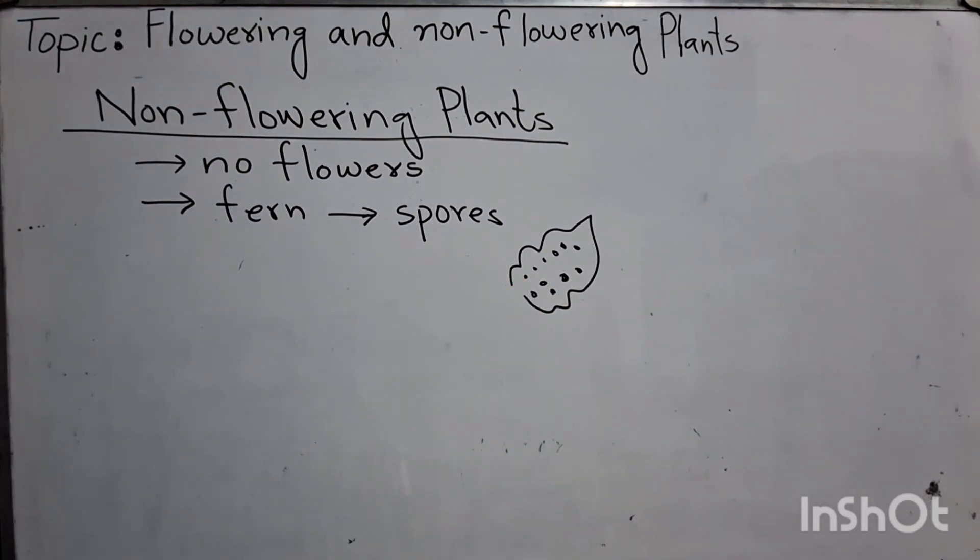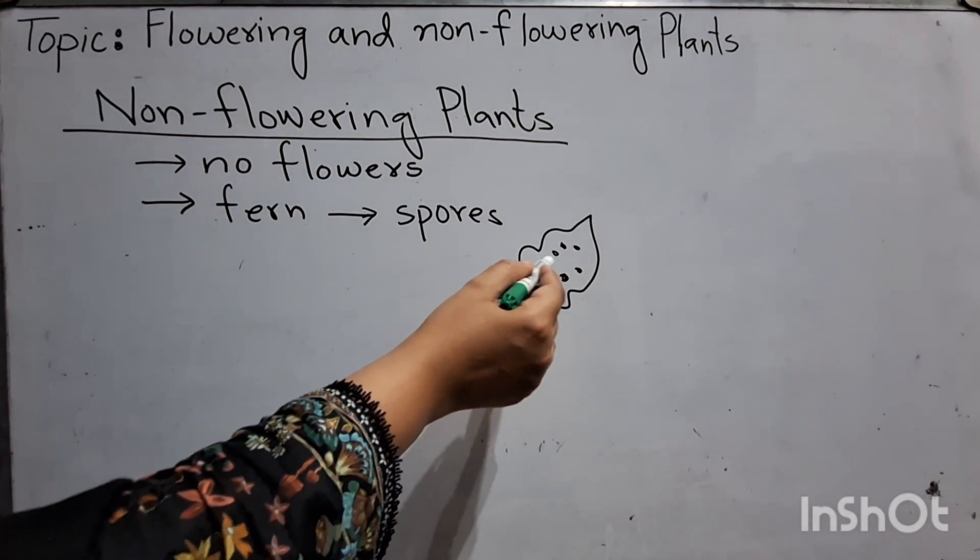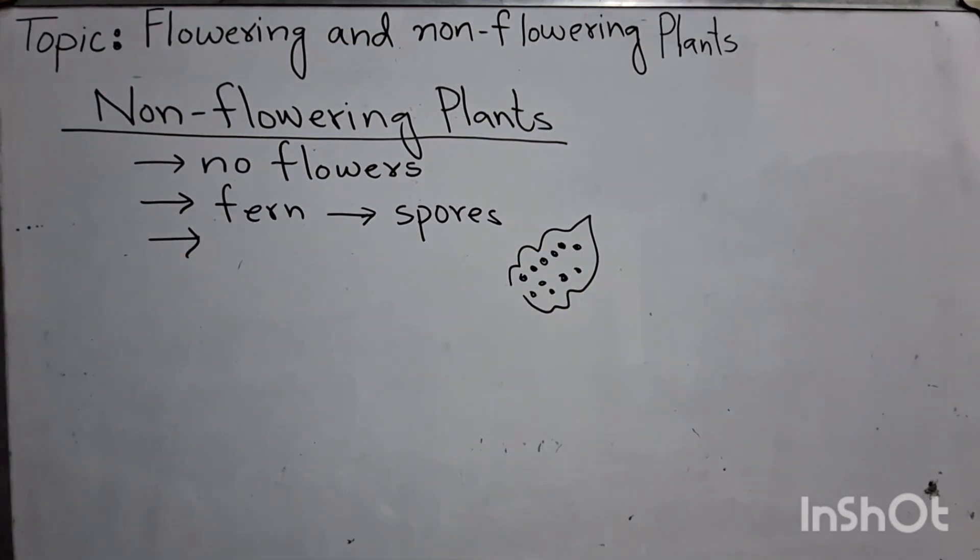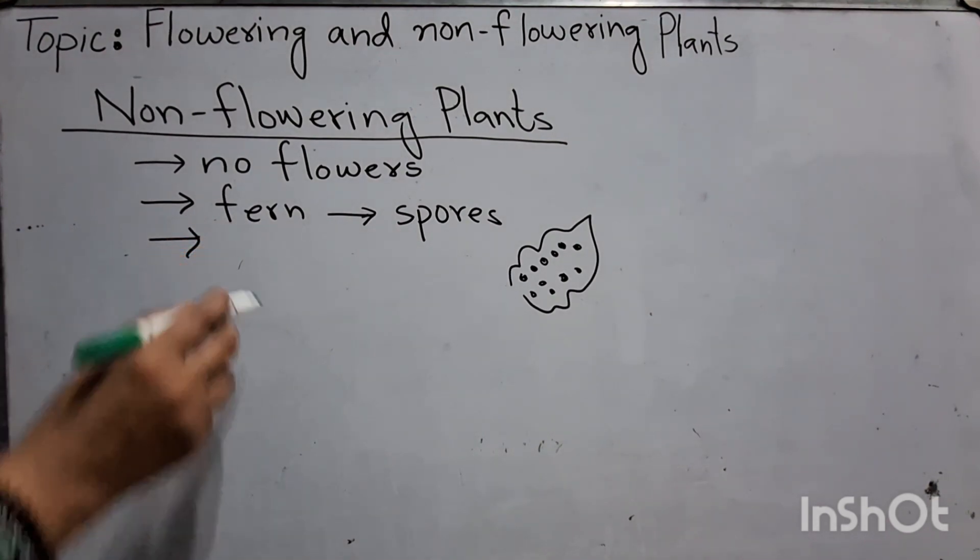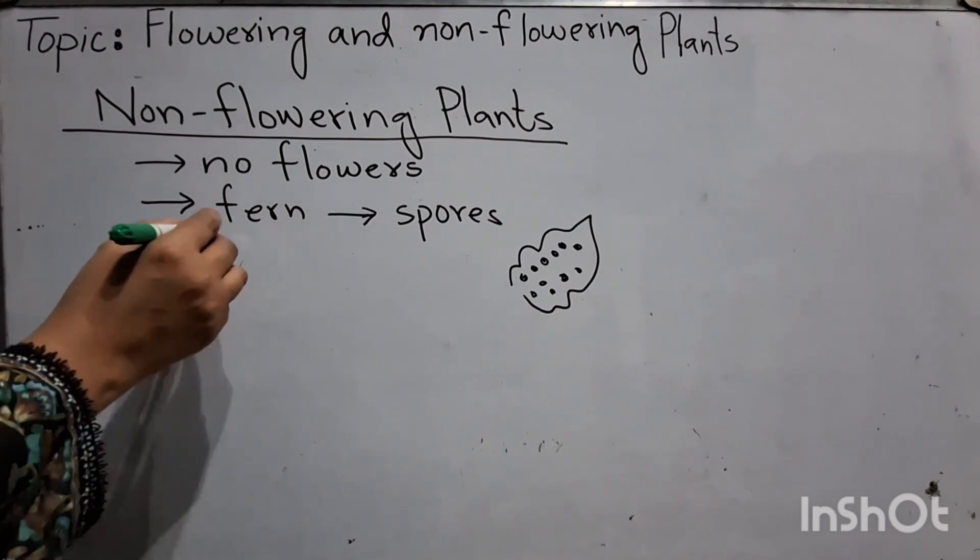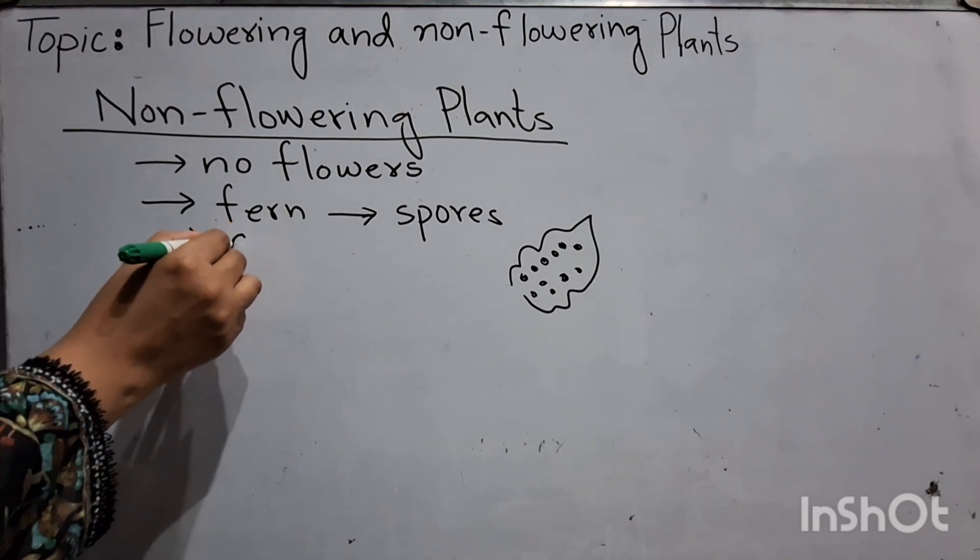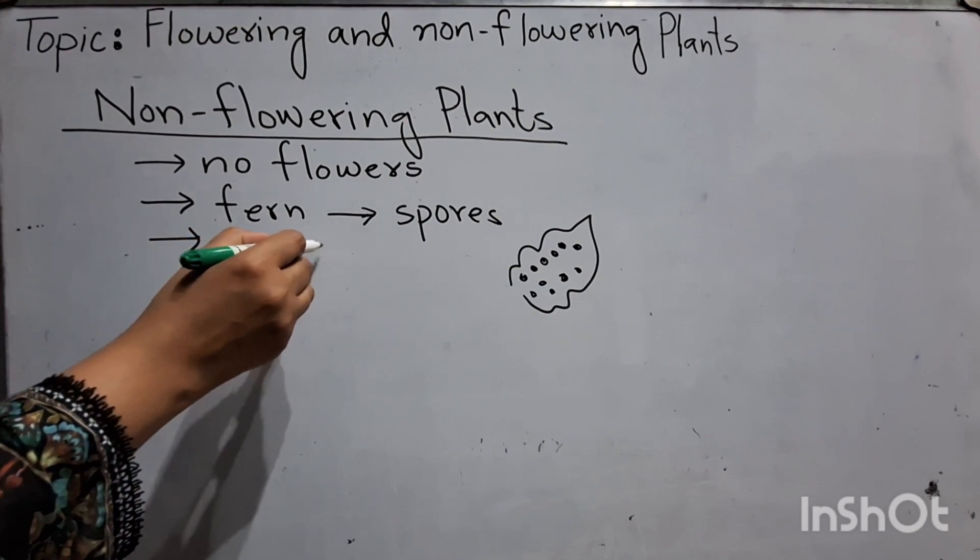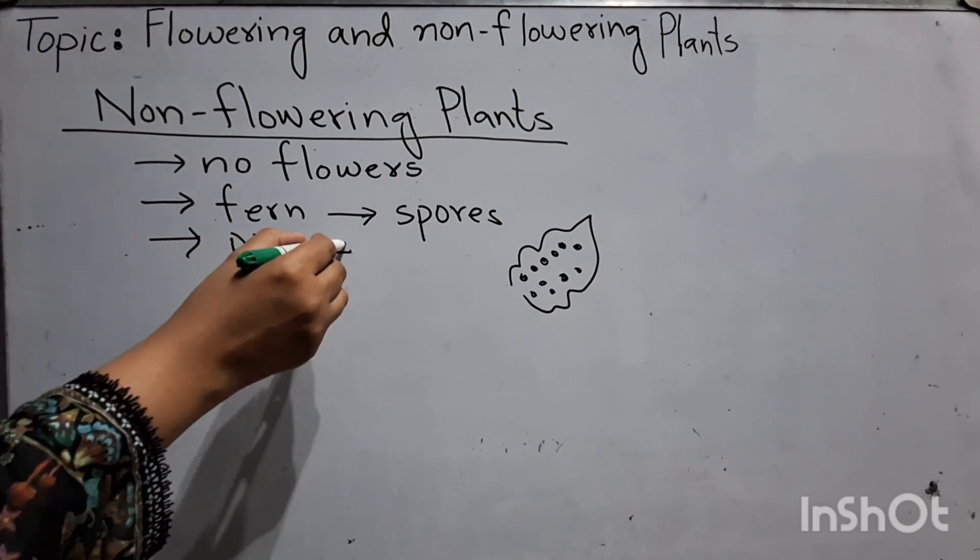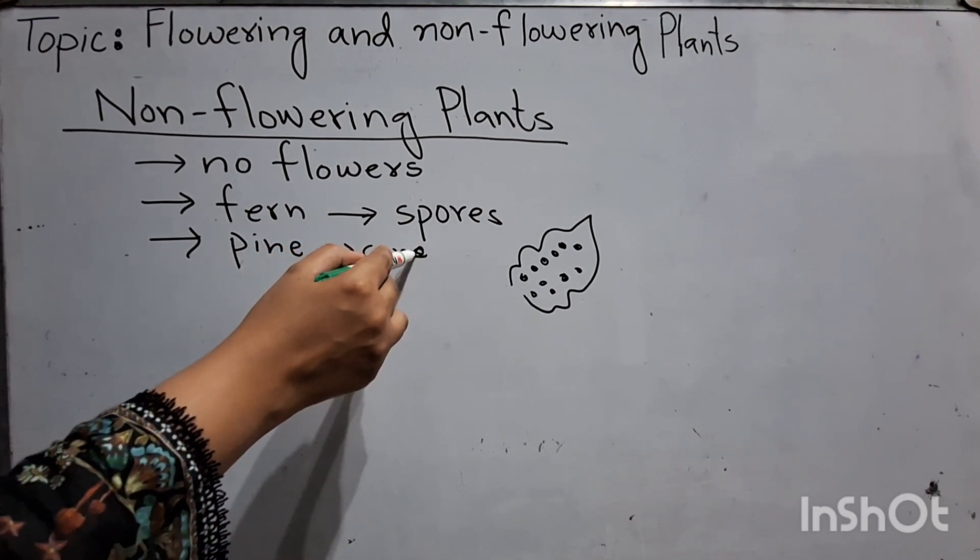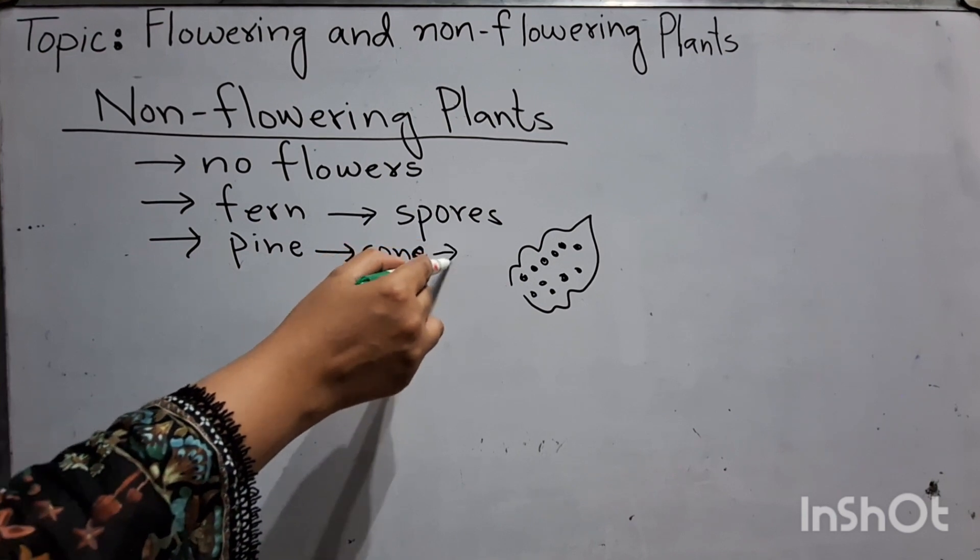They grow from their leaves spores. And some non-flowering plants produce seed but it does not produce flower. Like pine, pine tree produce cone and in cone produce seed.